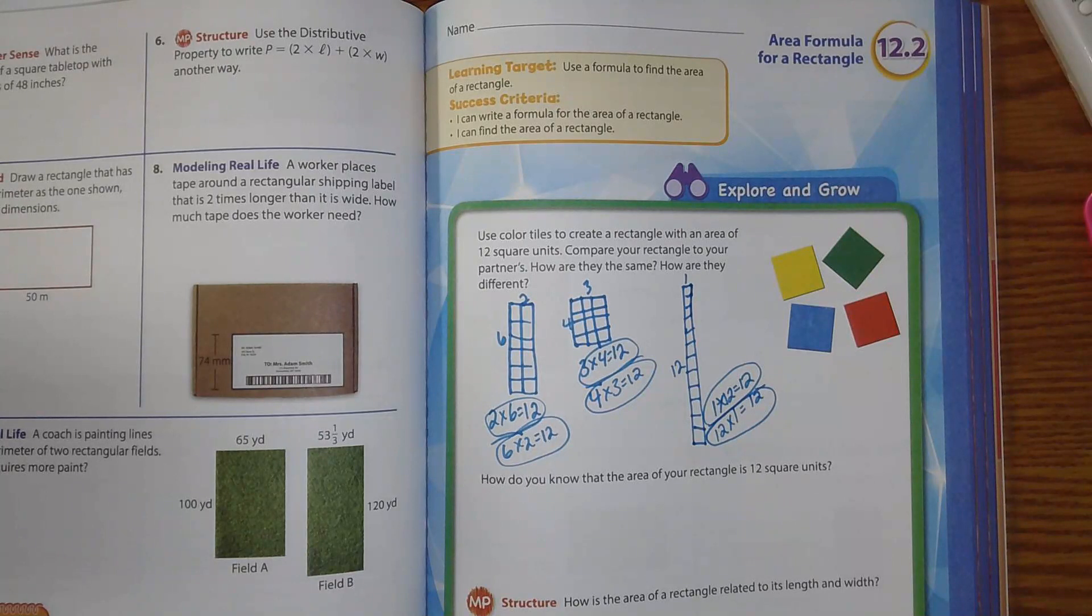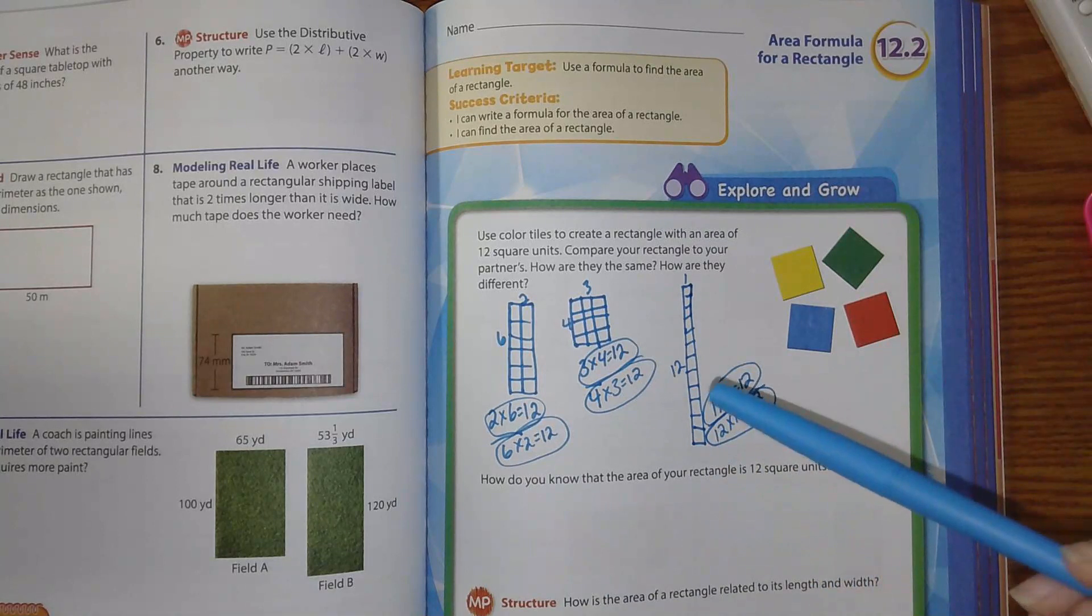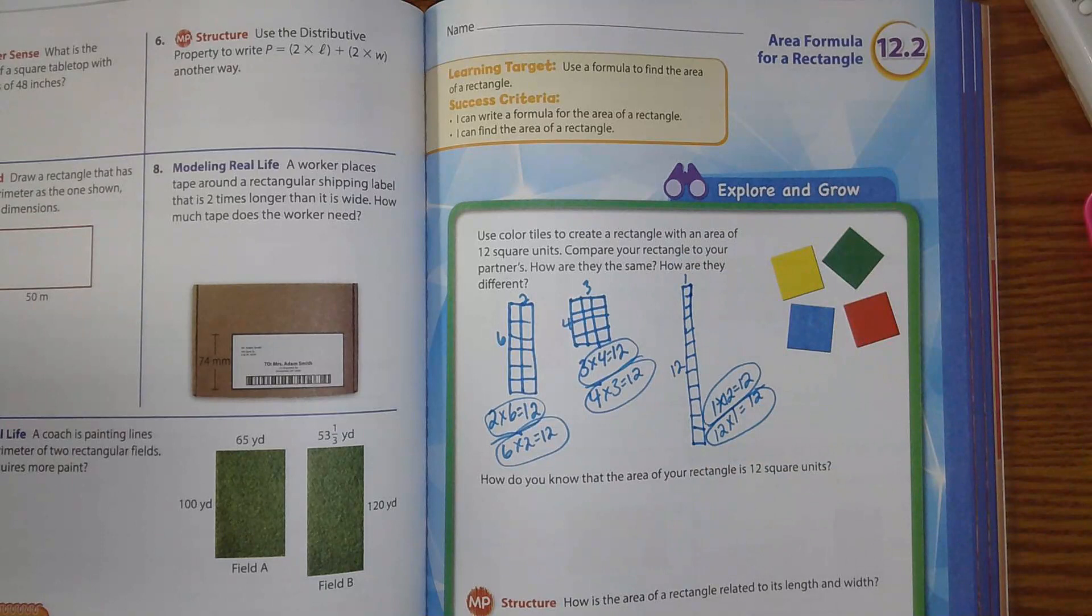So those are lots of different ways we can show the area of the rectangle. And notice the area is what's inside. We're not counting the outside of it, right? The outside is called the perimeter. Yes. Good job, guys. Let's turn the page and see what's next.